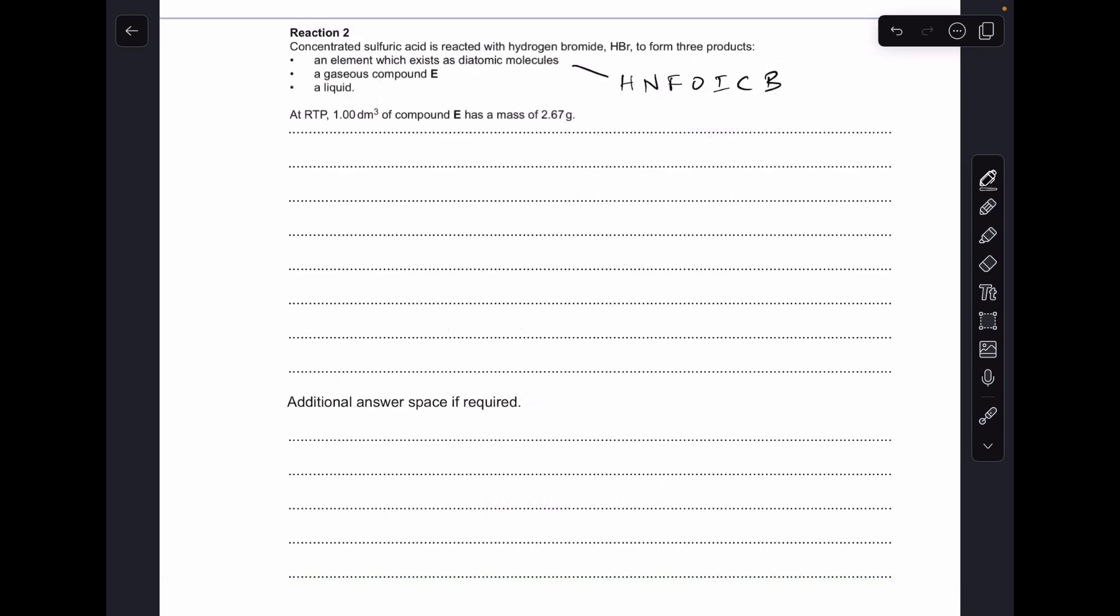Moving on to reaction 2, so we've got this reaction between concentrated sulfuric acid and hydrogen bromide. We get an element that exists as diatomic molecules. So that's my have no fear of ice cold beer acronym, just remember the diatomic elements.